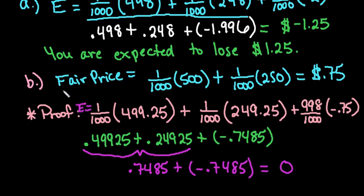So remember the fair price is when the expected value is 0. So if you are trying to find a fair price, what you want to do is take the probability of winning that particular prize times the whole prize plus the probability of winning the second prize times that whole prize, and that will give you the fair price.